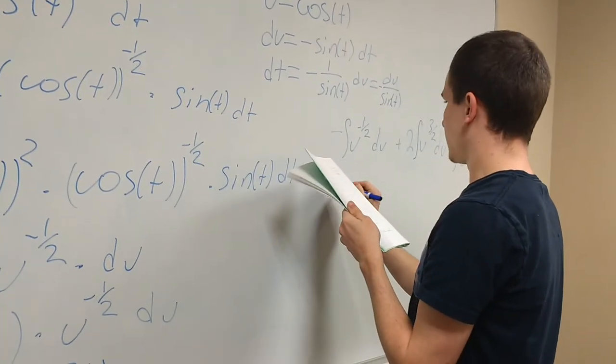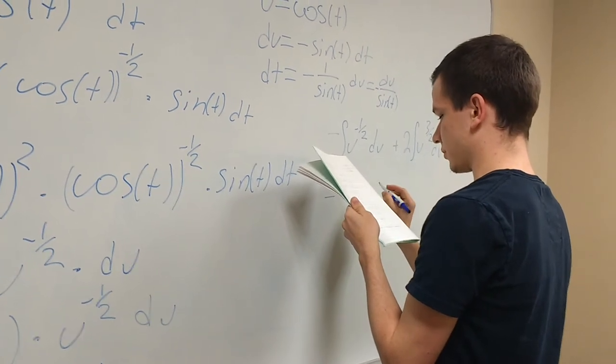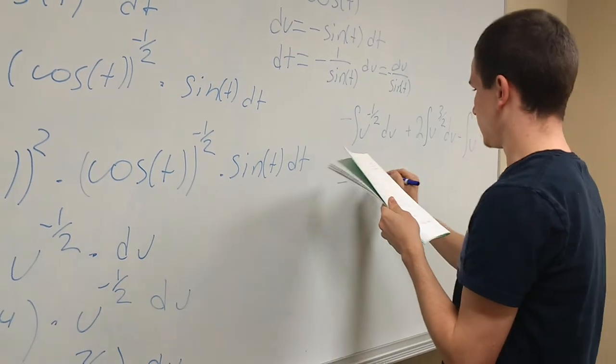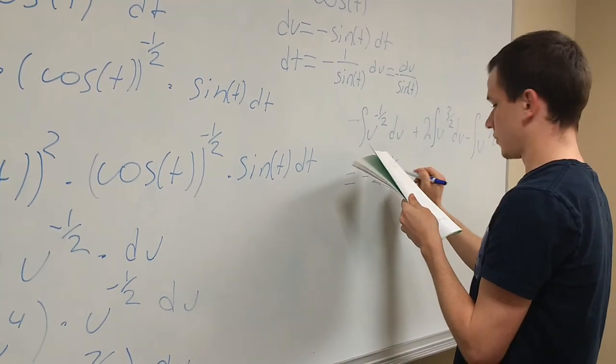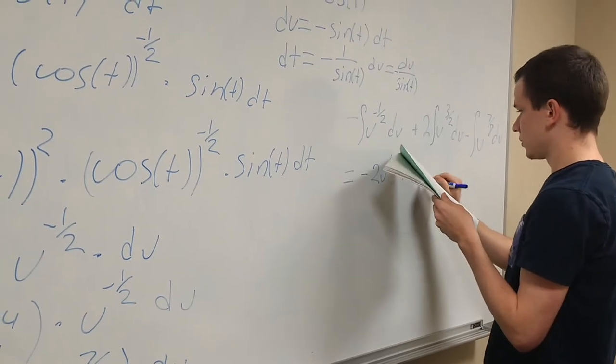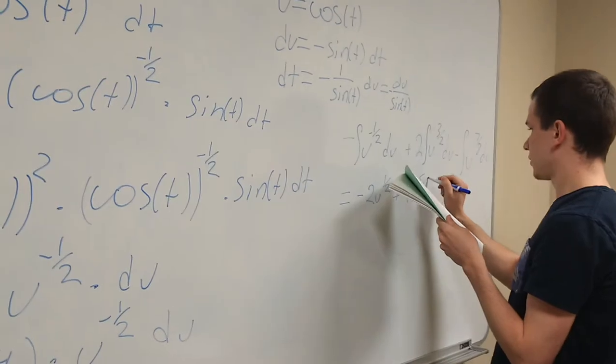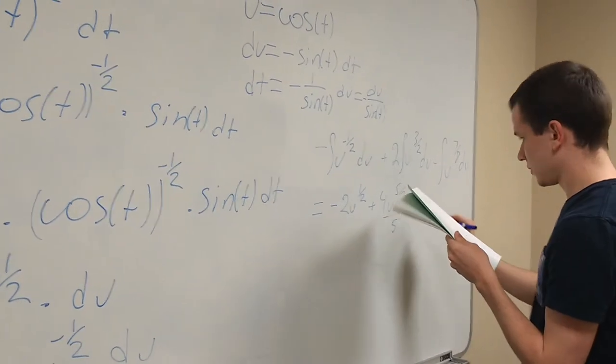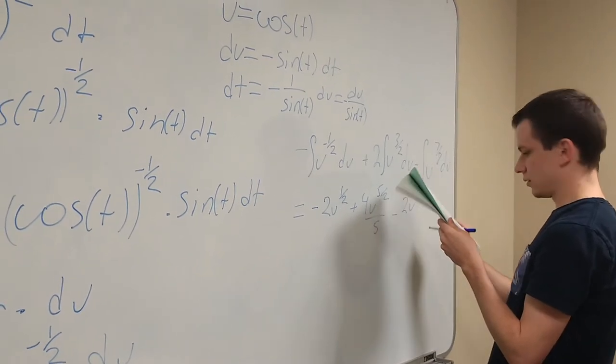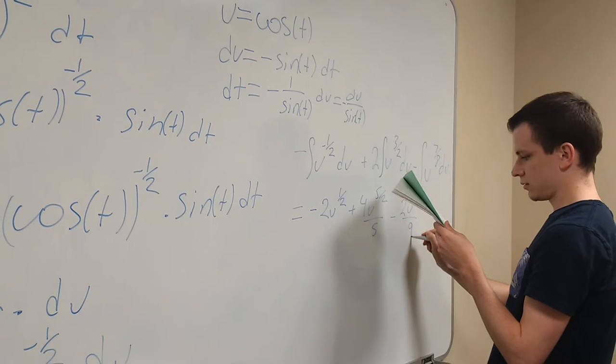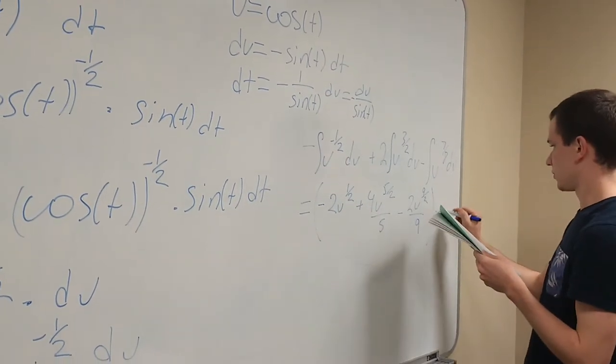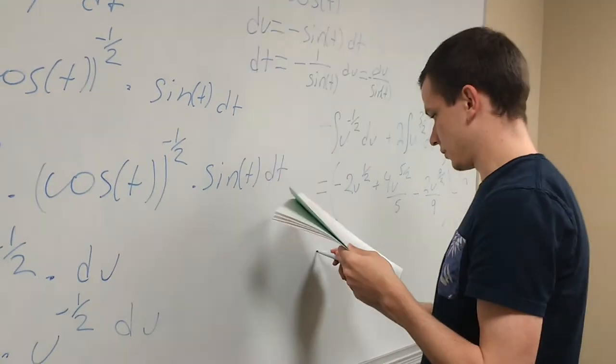And that is, after integration, would become negative two u to the one half plus four u to the fifth halves divided by five minus two u to the ninth halves over nine. And this is all plus c.